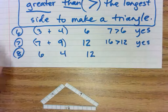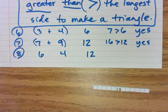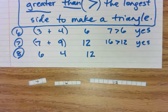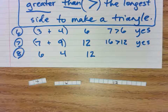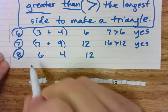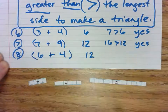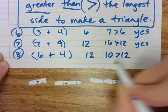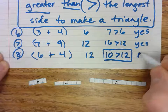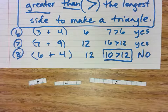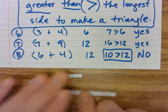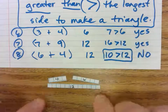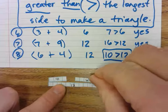Now let's try six, four, and twelve. Will those three sides form a triangle? Take the two smaller ones — six and four. Six plus four is ten. Is ten greater than twelve? No! So that is NOT going to work. Even if you lean the six and four down as far as they go, they're never going to meet because there's going to be a gap in the middle. They will not make a triangle.